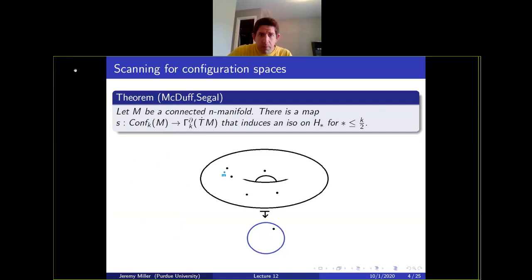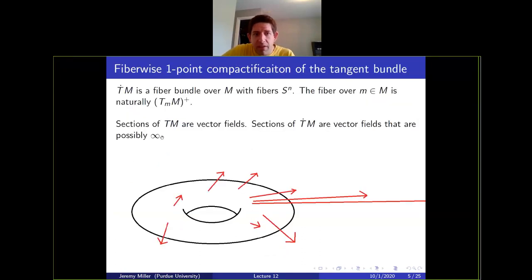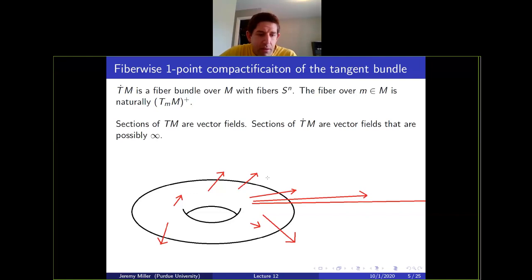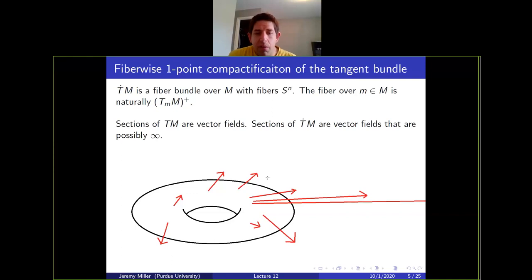Sections of the fiber-wise one-point compactification of the tangent bundle are possibly-infinite vector fields. We're sending configuration spaces to possibly-infinite vector fields, and the statement is that homologically this becomes a good approximation as the number of points tends to infinity.